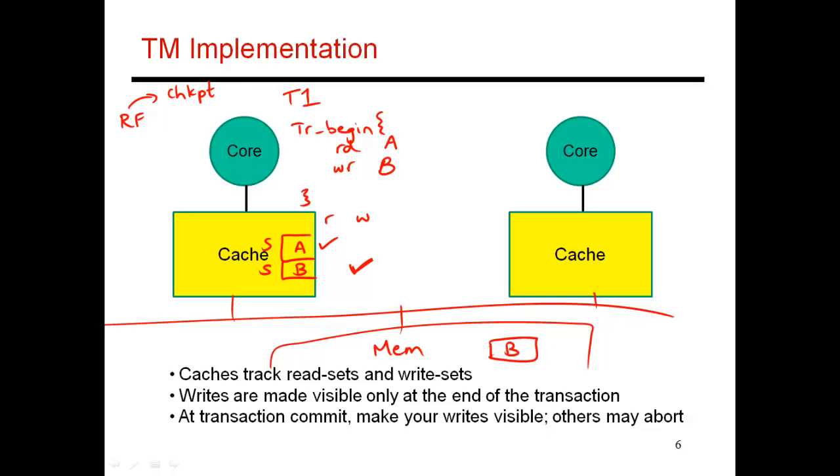At the same time there could be thread 2 running on this other core. It also does a transaction begin and maybe there's a read of B. As of now this transaction does not know that somebody else is modifying B. When it does a read of B it gets a cache copy and this block is in shared state. It sets the read bit saying I have just read B within this transaction.